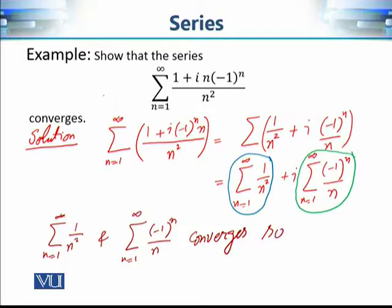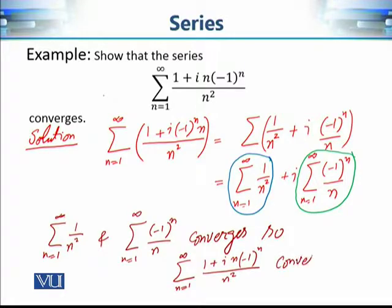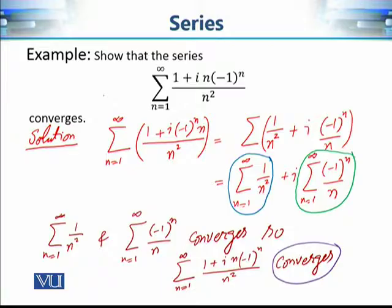From our knowledge of real analysis, we know that both of these real series are convergent. If these two series converge, then using our previous result, the given series of complex numbers is also convergent. This is a very simple example where, without our previous result, it would be very complex — for instance, constructing the sequence of partial sums directly and checking convergence would be very complicated. But our previous result helps us check the convergence or divergence easily.